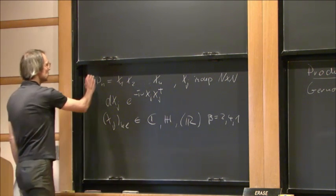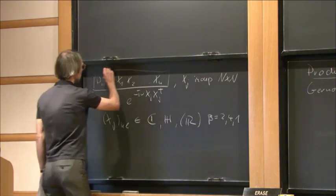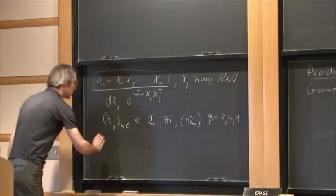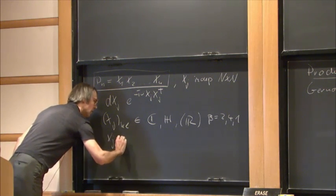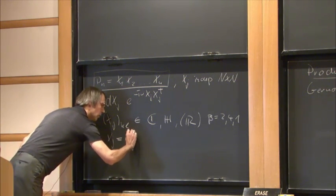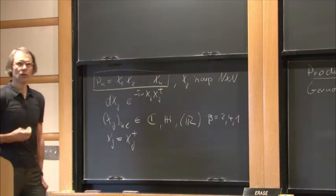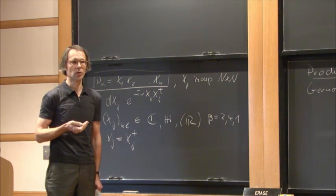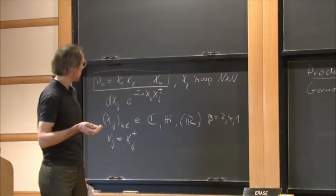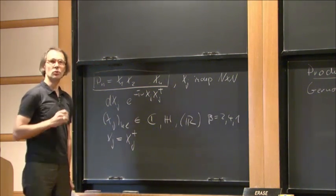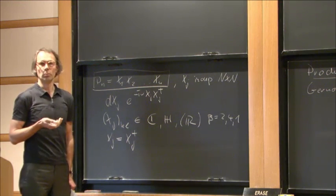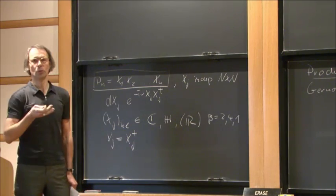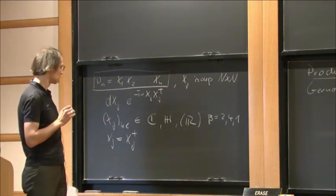What I would like to study are matrices which have the least symmetry. I will study matrices X_J that are complex non-Hermitian. The reason is simple: if you start with a matrix that has certain symmetries, say real symmetric, and you multiply real symmetric matrices, the product will not be real symmetric. So for simplicity, I start with matrices that have the least symmetry already to begin with.